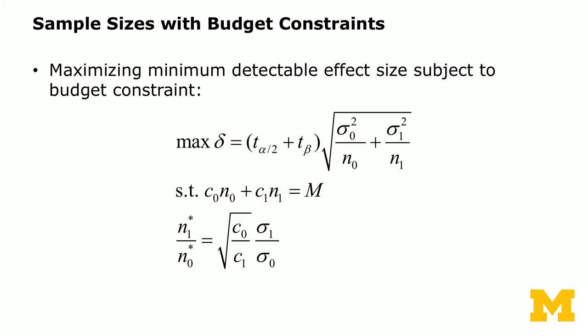We can do derivations similar to before. We know delta — the difference between treatment mean and control mean — as the minimum detectable effect size. The marginal cost to collect one observation from a control subject is C0, and from a treatment subject is C1. Your total budget constrains you: total spending on control subjects plus treatment subjects must not exceed your budget.